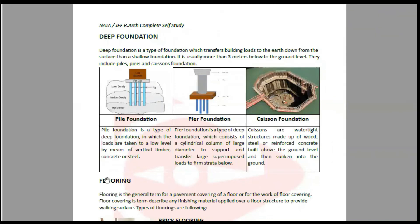The three types are: pile foundation, pier foundation, and caisson foundation. In pile foundation, vertical members called piles go deep inside the ground. These piles transfer the load down to deeper soil layers.